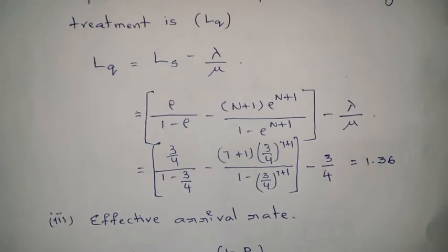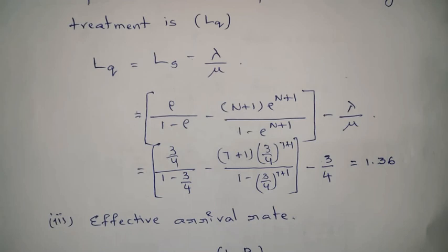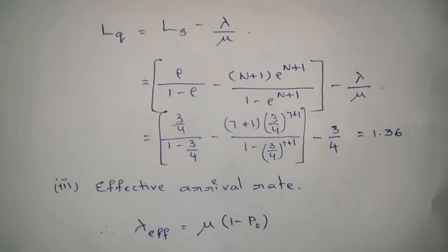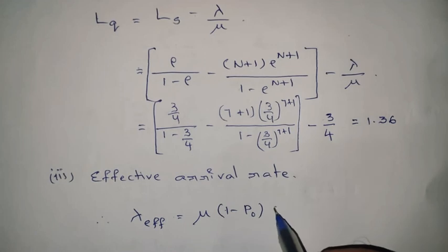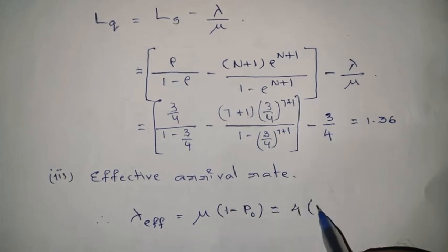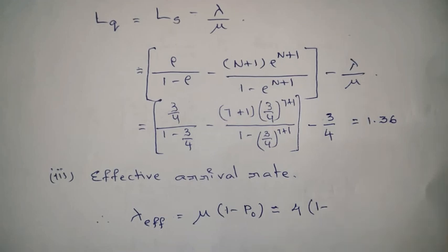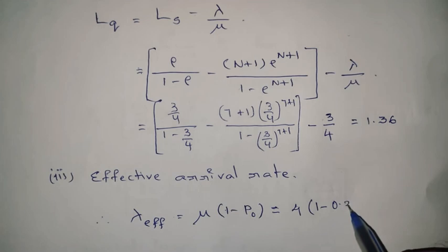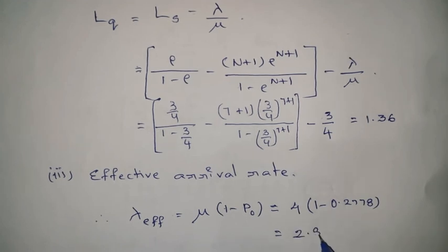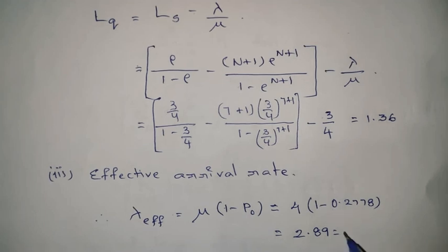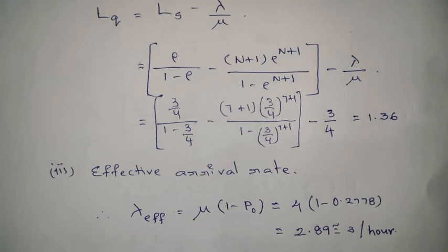Part 3: Effective arrival rate. The effective arrival rate λ_effective = μ × (1 − P(0)) = 4 × (1 − 0.2778) = 2.89, which is approximately 3 per hour.